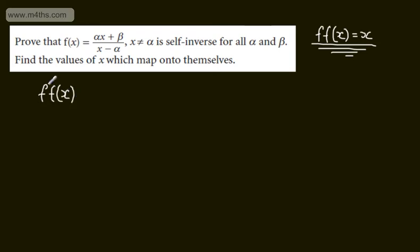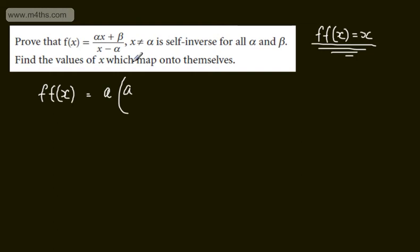So we do f and put it through f. What we're going to have here is alpha, and then we're going to have alpha x plus beta over x minus alpha. So just setting this up — every time I see x, I'm going to feed in alpha x plus beta over x minus alpha.